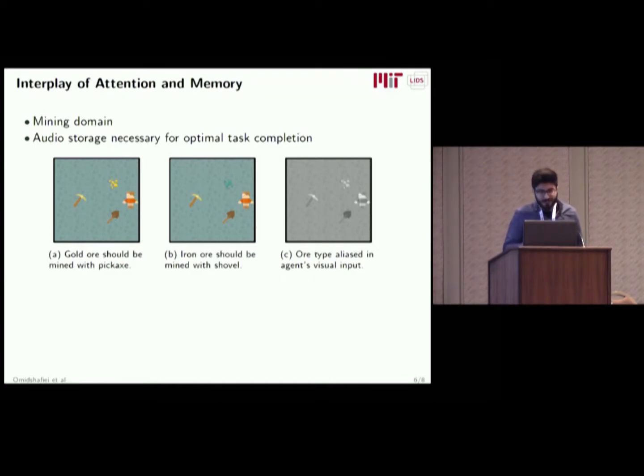Next, we wanted to consider a domain where audio actually plays a key role. We have a Minecraft-like domain. There are two ores, gold and iron. But critically, with the grayscale visual input of the agent, we replace the sprite of this ore with a single sprite. The agent has to figure out what the correct tool is, the shovel or the pickaxe, to mine this ore. So it has to go near the ore, interact with it, get some unique audio features, remember these audio features, and then use them to pick the correct tool type.